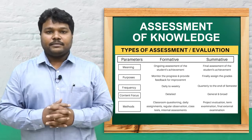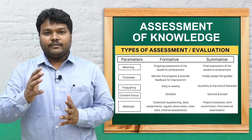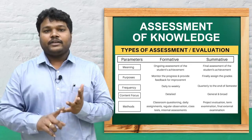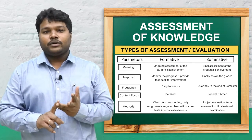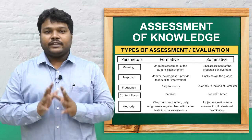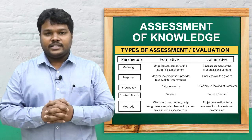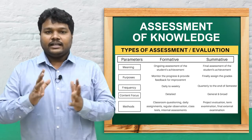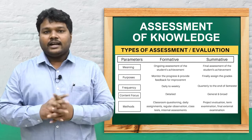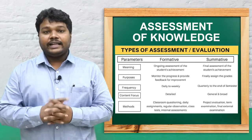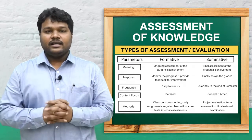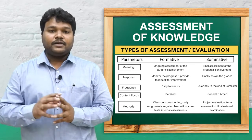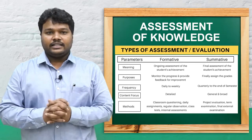In summative assessment, at the end of teaching we summarize the topic. It refers to final assessments like annual examinations and university or board examinations. We cannot make corrections to students at this stage — whatever they present in the exam directly reflects their result. It is mainly helpful for grading students. In formative assessment we can correct the student, but in summative assessment we cannot — that is the final result.